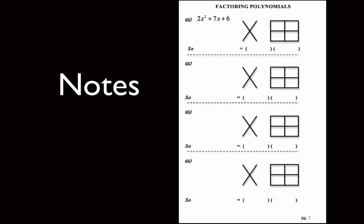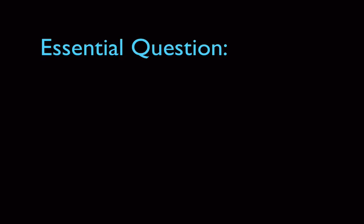We're going to start on page one of factoring polynomials. It's the one that has the example already in there, and the rest of them are all blank. As you can see from the entire notes page, we pretty much just have about nine worked out examples.